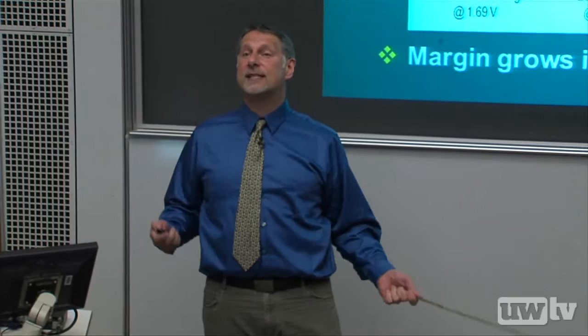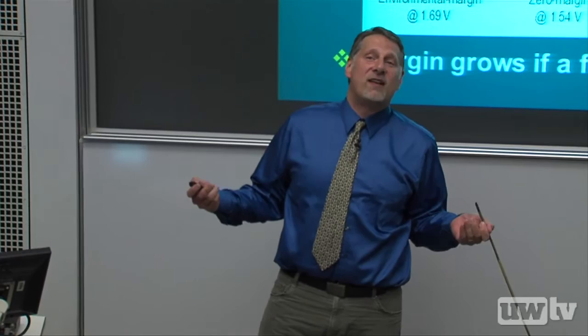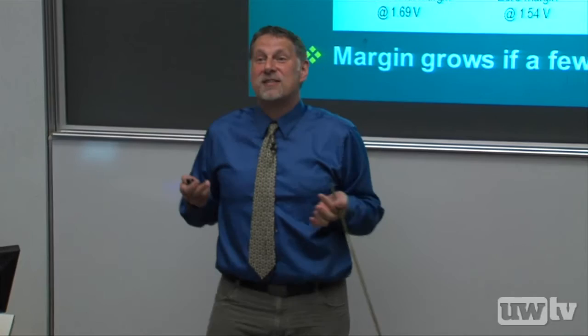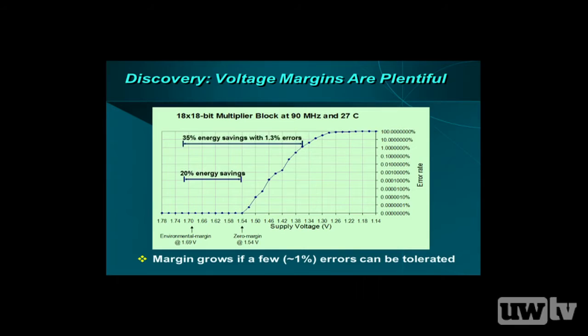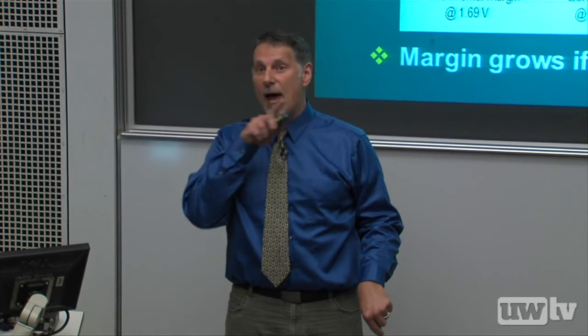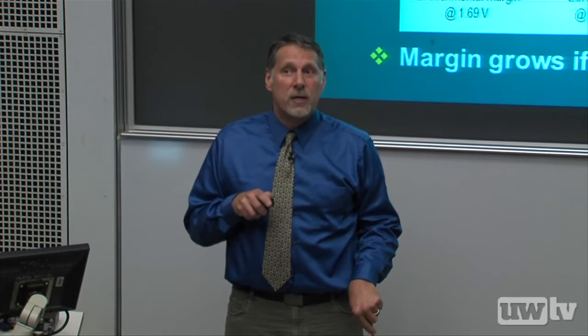The first error rate is one error every 20 seconds, doing 90 million multiplies per second — a pretty low rate. As a computer architect, anything below 1% you're not going to notice. At 1% error rate around 1.37 volts, if I can magically correct those errors, I get 35% energy savings — one third of the energy back. But I've got to detect and correct those errors absolutely reliably, every single one, because programmers hate it when you don't execute their instructions right.